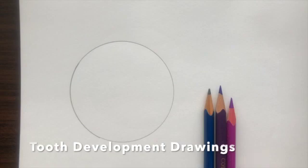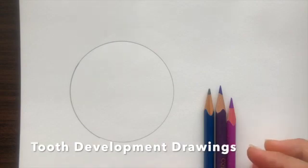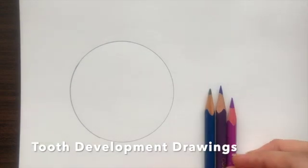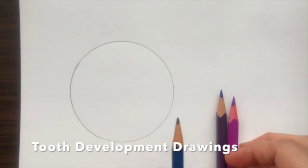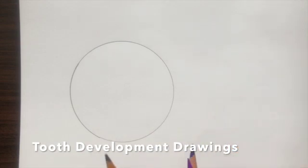We are starting to draw the bud stage of tooth development, and later in the same video we will be learning to draw the cap stage as well. We have used a hematoxylin pencil and a lead pencil to draw the circle and to label the diagram later.